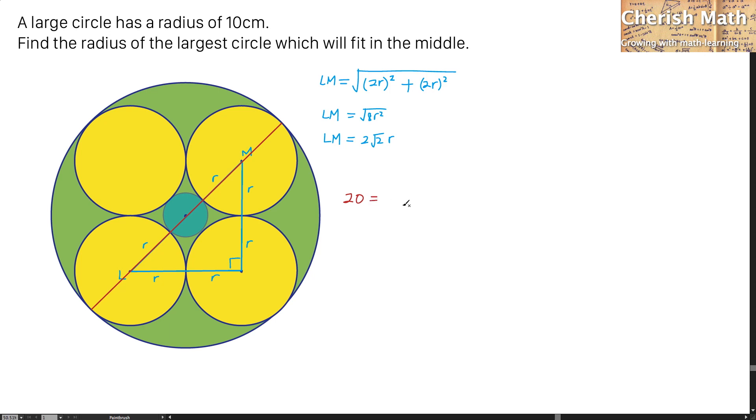And it is the same as the value of this is the radius R plus the length of LM and plus the rest of the part here, which is R as well. So, I'm going to use the value of the LM and substitute into this equation. And I'm going to get 2R plus 2 square root of 2R equal to 20.